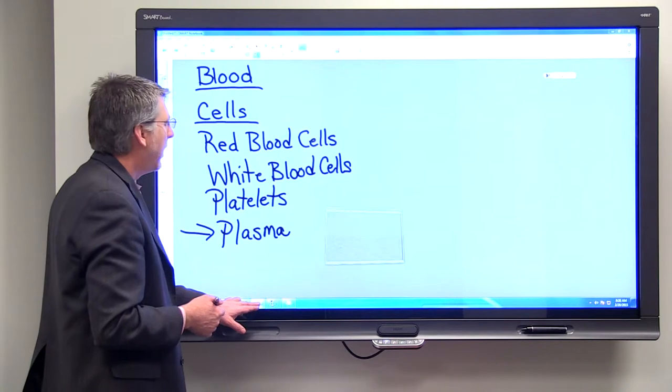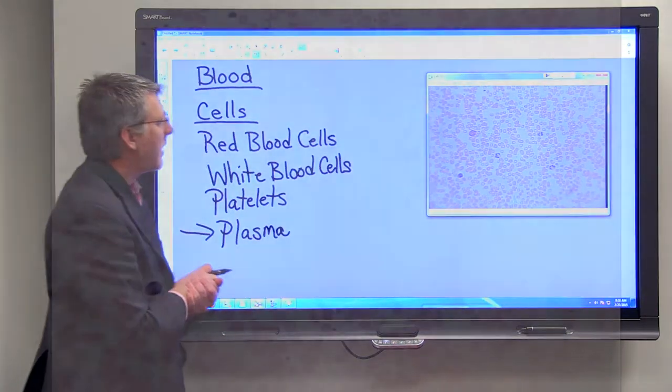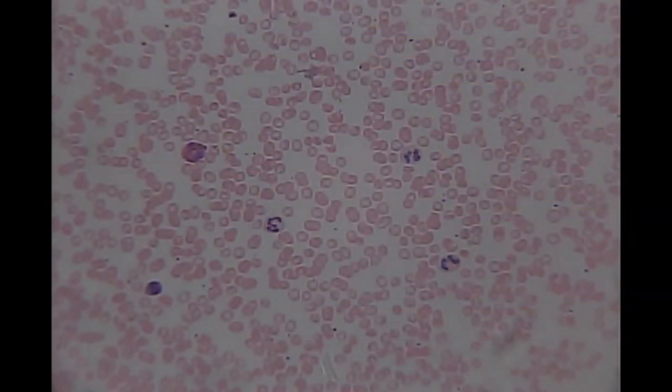If we look at a micrograph of some blood, you can see the different things that we're talking about. Now when you look at this micrograph, you can see many of the cells are sort of pink colored, and the pink ones are the red blood cells.